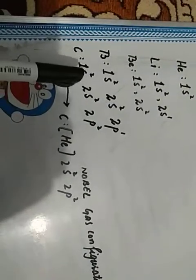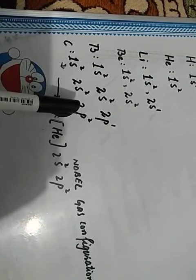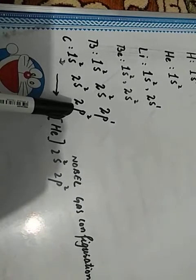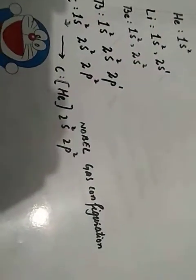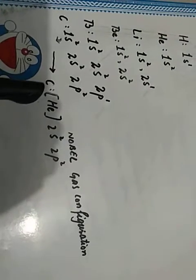Carbon has 6 electrons (atomic number 6). Two electrons go to the first shell, two electrons go to the second shell's s sub-shell, and two more go to the p sub-shell — the p sub-shell can accommodate a maximum of 6 electrons, so it can still hold 4 more. When we look at electronic configuration up to element 118 in the periodic table, we also use noble gas configuration notation.